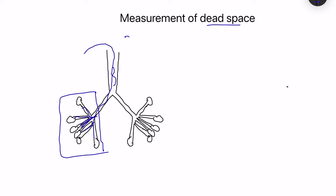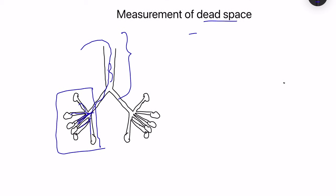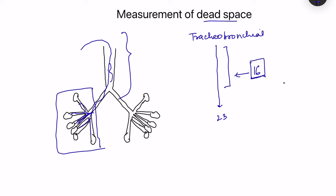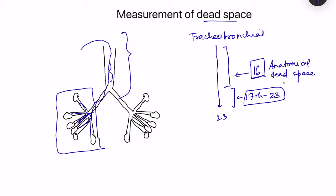The air which remains in the conducting zone of the respiratory system has no gas exchange. The tracheobronchial tree consists of 23 divisions. The first 16 divisions are the conducting zone or dead space, and because it is anatomically present it cannot be avoided — this is known as anatomical dead space. It is only in the last seven generations, from the 17th to 23rd division, that gas exchange takes place in the respiratory zone, consisting of respiratory bronchioles, alveolar ducts and alveolar sacs.